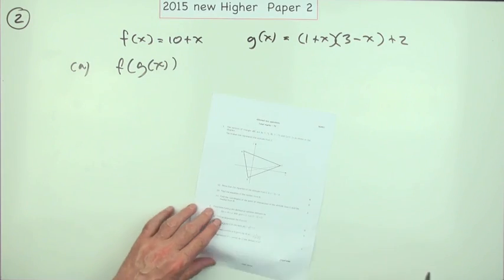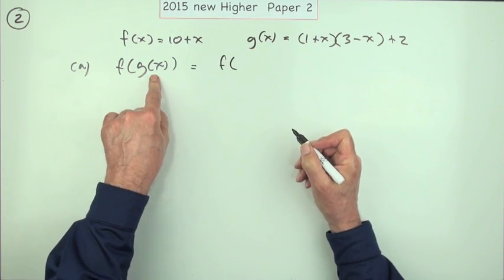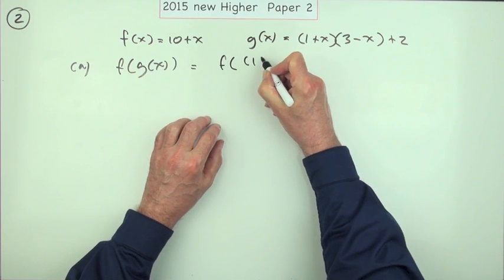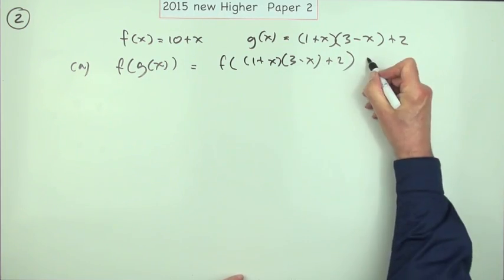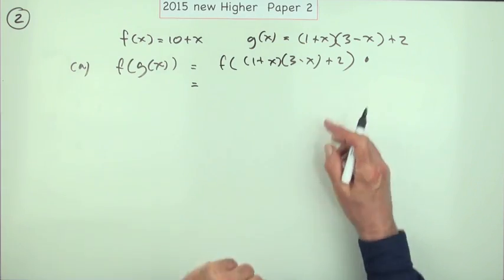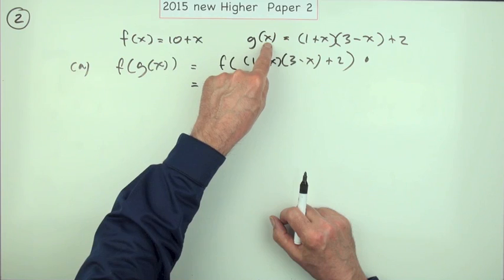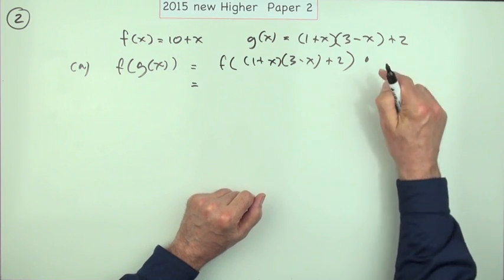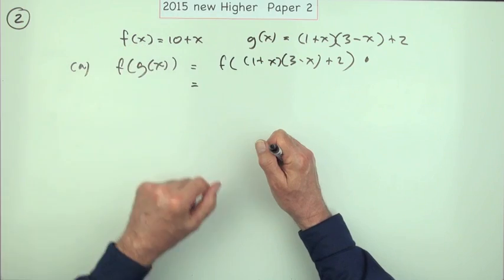Part a simply says f is acting on g of x, so whatever g of x does you feed that to f. And what does g of x do? It does this: (1+x)(3-x)+2. So that's what you feed in. That gets you a mark. The second mark is for saying now what does f do to anything it gets hold of. Of course, that x is not the same as that x. That x is just a convenient placeholder for anything you care to put in.